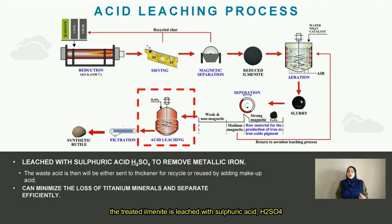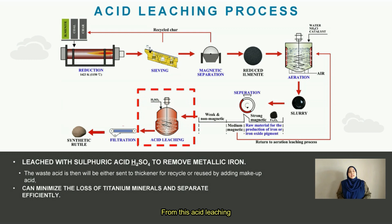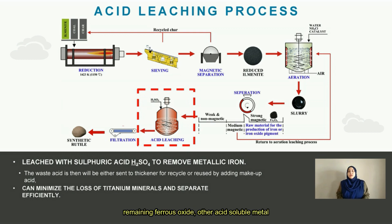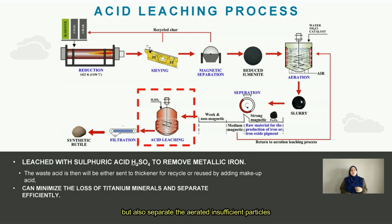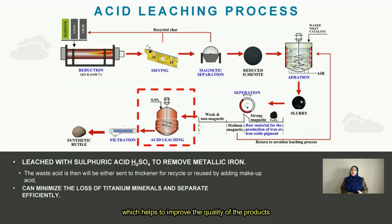In acid leaching, the treated ilmenite is leached with sulfuric acid (H2SO4). This dissolves unreacted metallic iron, remaining ferrous oxide, and other acid-soluble metals, removing residual iron and manganese. Wet magnetic separation minimizes the loss of titanium minerals while separating insufficiently aerated particles and returning them to the aeration process, improving the quality of the product.